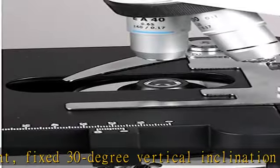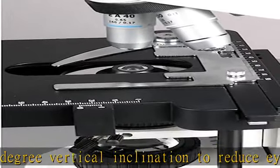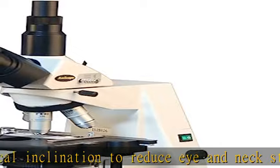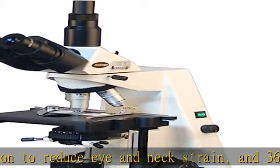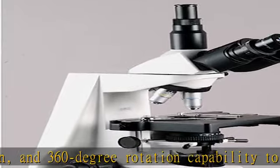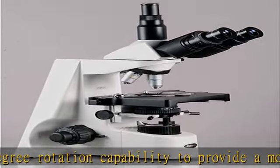The condenser has two iris diaphragms for precise focus and light control. The double-layer mechanical stage includes 1mm stage divisions and stage stop, with graduated coarse and fine focus controls featuring tension adjustment to prevent stage drift.